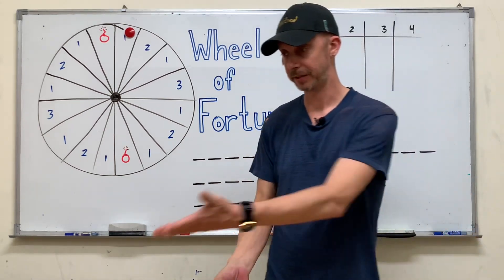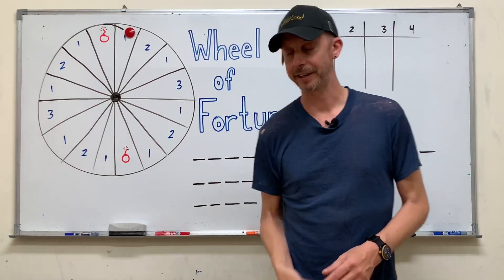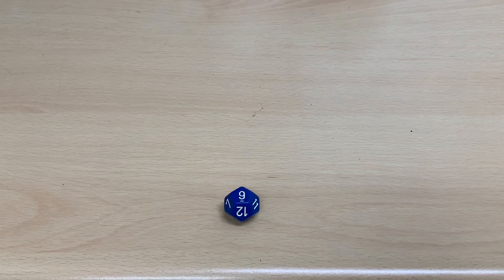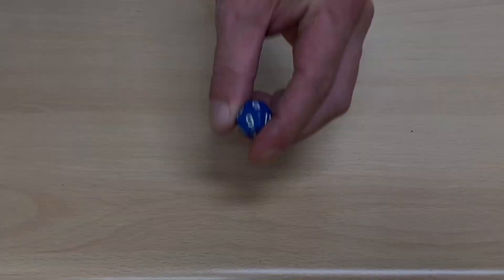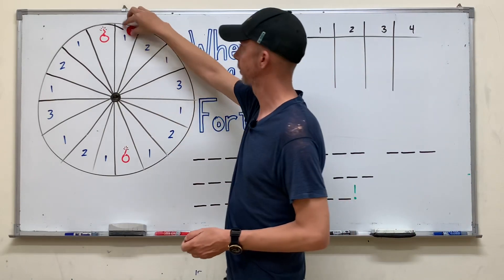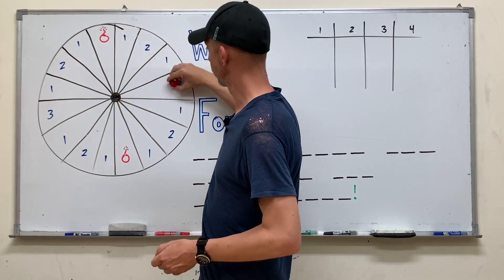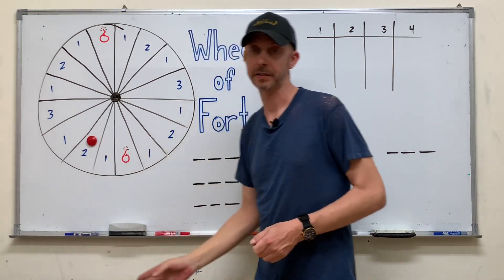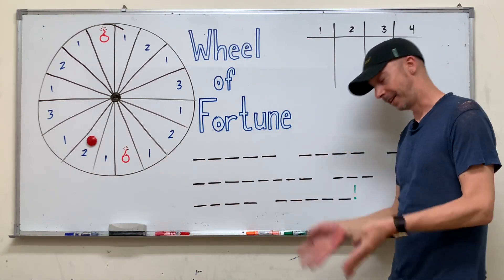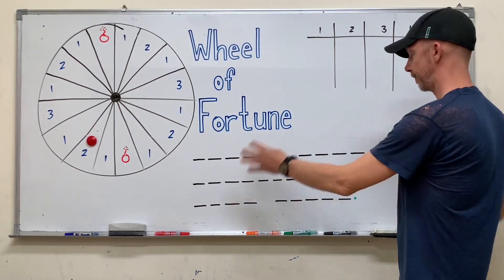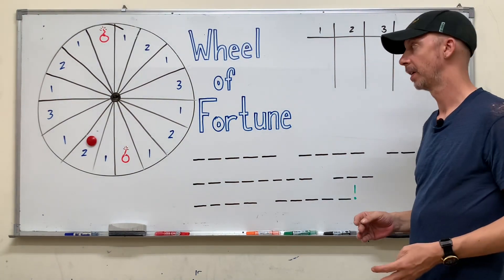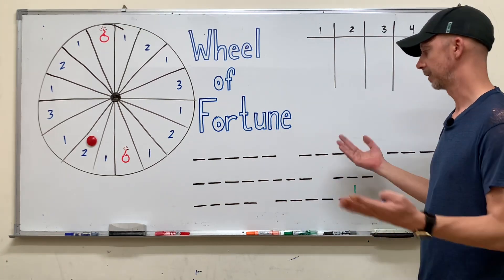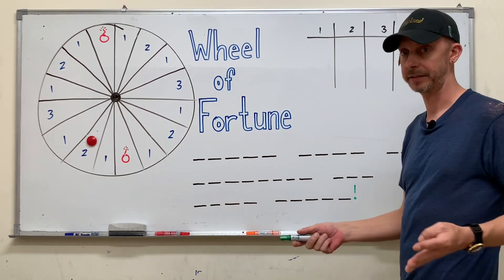Let's say you're there first — you get to roll the dice. It's a nine. Here's how the wheel works: one, two, three, four, five, six, seven, eight, nine. They landed on two points, which means the next step is to choose a letter they feel might be in this sentence somewhere. For each time that letter occurs, they get two points.